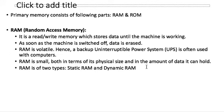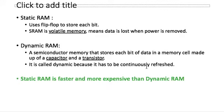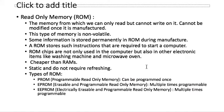RAM is of two types: Static RAM and Dynamic RAM. Static RAM uses flip-flops to store each bit and is volatile. Dynamic RAM is made up of a capacitor and transistor and must be continuously refreshed — that's why it's called 'dynamic.' Static RAM does not need continuous refreshing, is faster, and more expensive than Dynamic RAM.